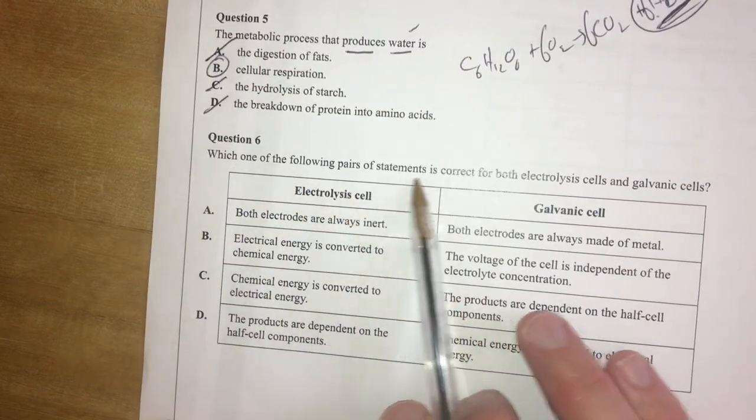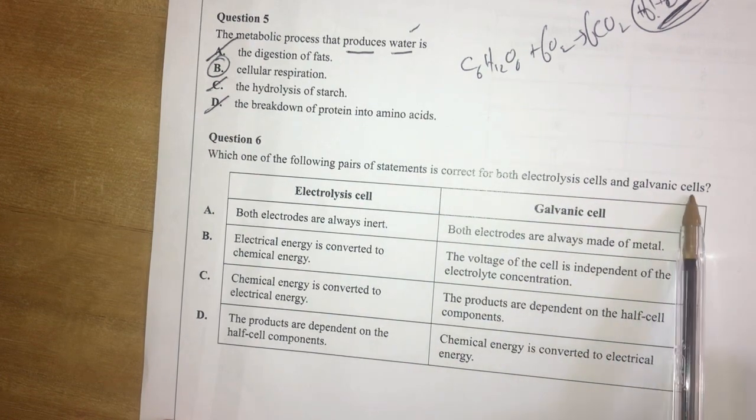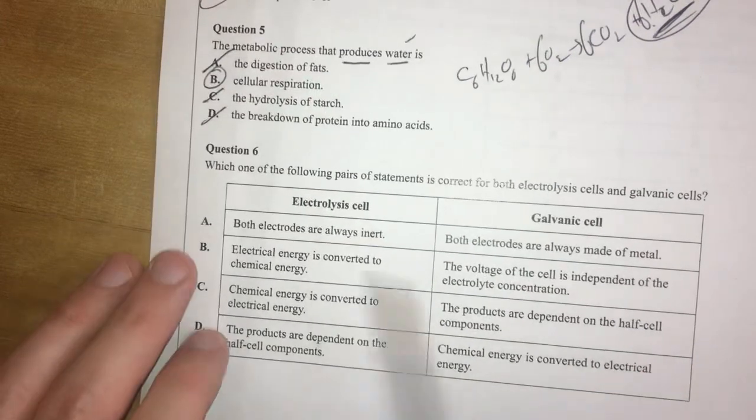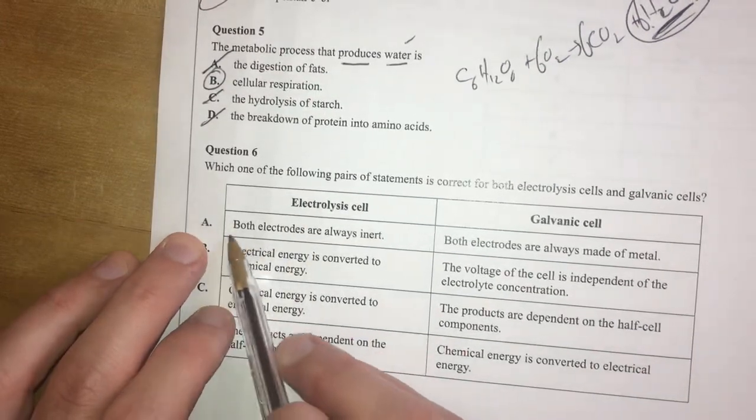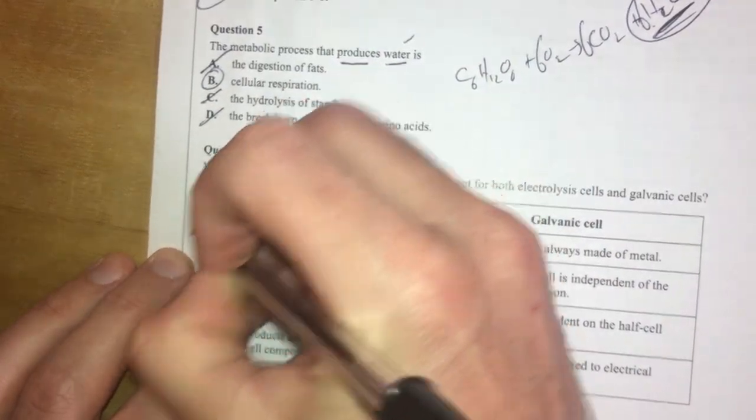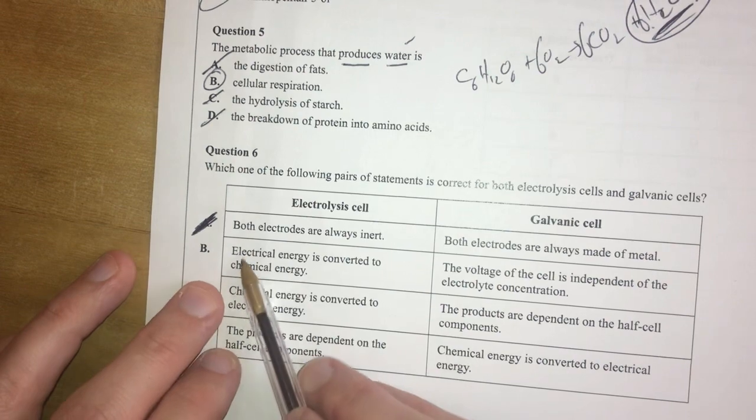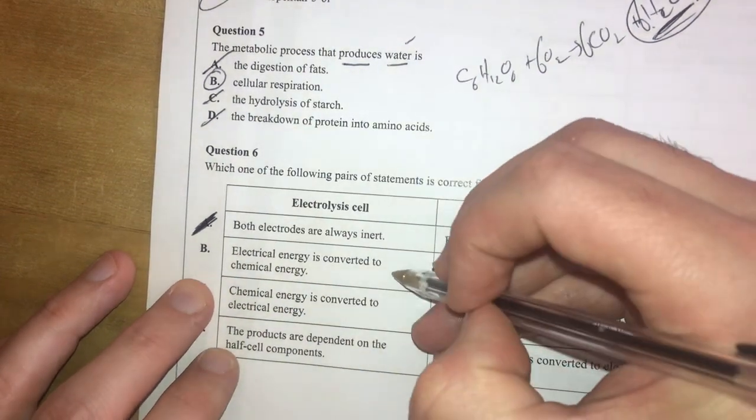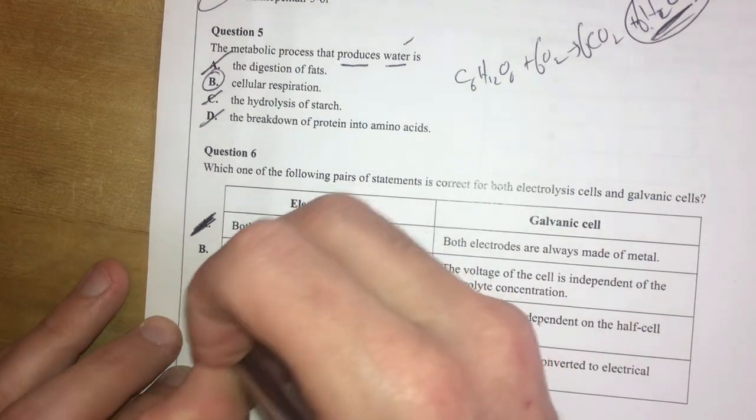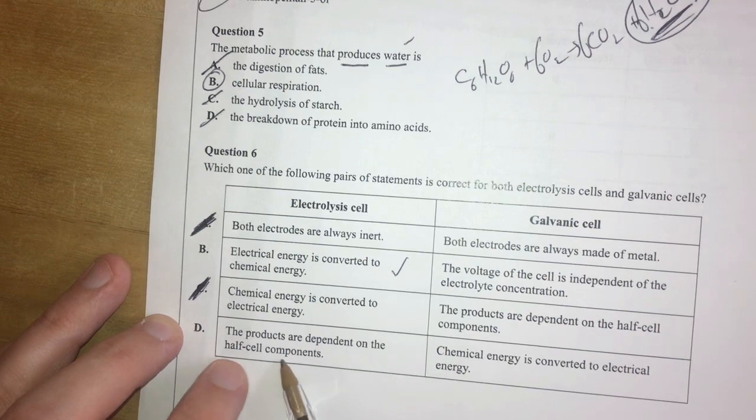So let's go. Now, question six. Which of the following pairs of statements is correct for both electrolysis cells and galvanic cells? So electrolysis cells and galvanic cells. Let's have a look. In electrolysis cells, are both electrodes always inert? No. You might have a reaction occurring with an electrode. So that's not right. Electrical energy is converted into chemical energy. That's true there. Chemical energy is converted into electrical energy. That's not right. The products are dependent on the half cell components.